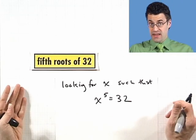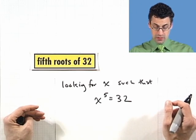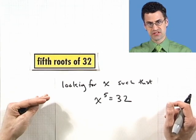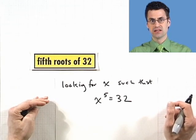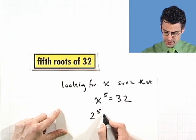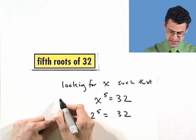Well, can we think of any? Well, yeah. 2. 2 times 2 is 4 times 2 is 8 times 2 is 16 times 2 is 32. So 2 to the fifth equals 32. So x equals 2 is an answer.